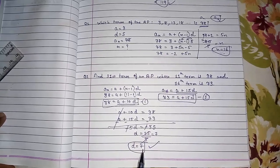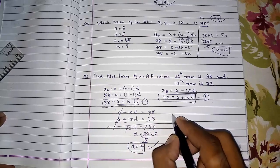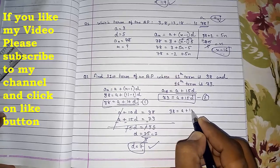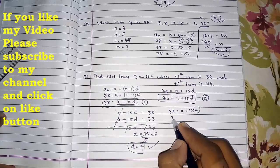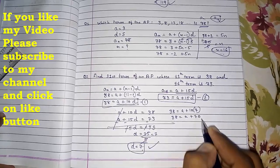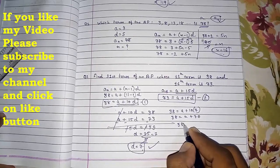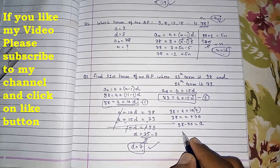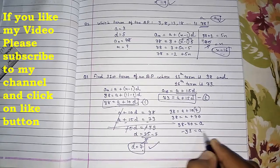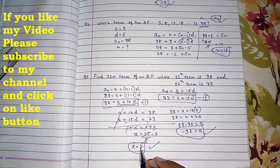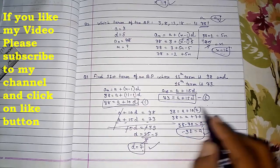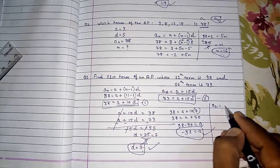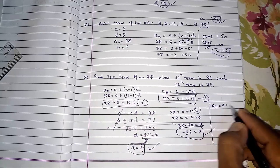Now you are getting D. Now keep in any of the equation. I will put it here. 38 equals A plus 10 multiply with 7. So 38 equals A plus 70. So you will get a negative term, minus 32. So your first term will be minus 32. Your difference is 7. Now directly you can find out the 31st term.